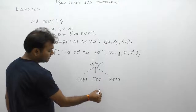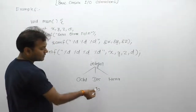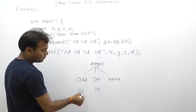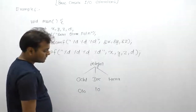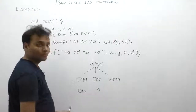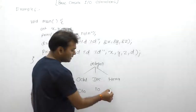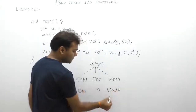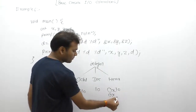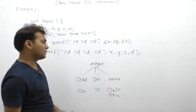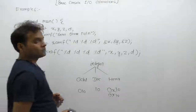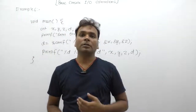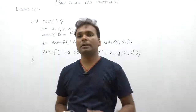If any integer number is simply written like 10, then it will be considered as decimal. If any integer number starts with zero, then it will be considered as octal. Similarly, if any integer number starts with zero x (0x), then it will be represented as hexadecimal.